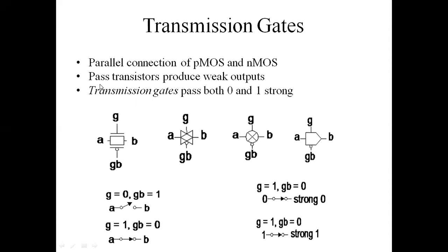We have already seen that a pass transistor produces weak outputs. NMOS produces only strong zero and PMOS produces strong one, while the other levels are weak — PMOS gives degraded zero and NMOS gives degraded one. The transmission gate, however, passes both levels as strong zero and strong one.